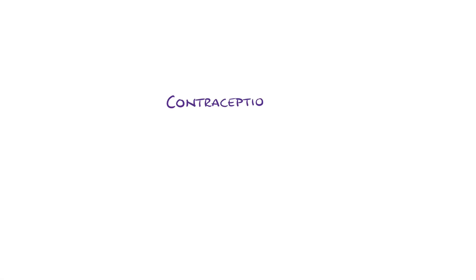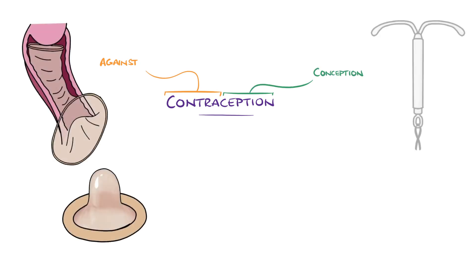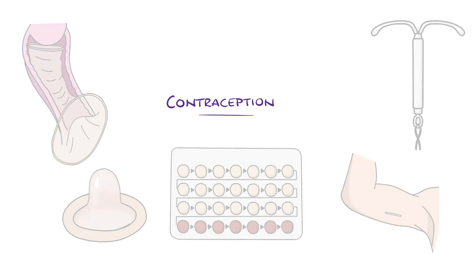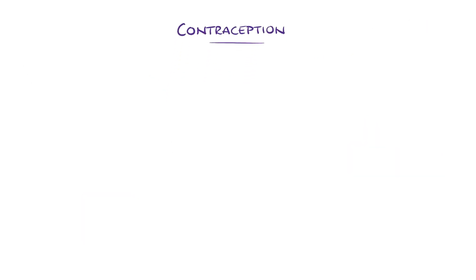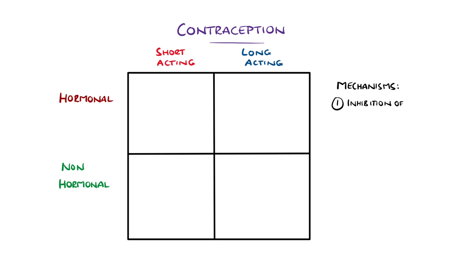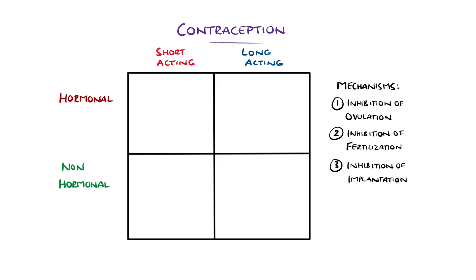In this video, we'll cover the main forms of contraception. The word itself means against conception, but the way each type achieves this is different. An easy way to remember them is by dividing into short or long acting, and hormonal or non-hormonal. You can also remember that the mechanisms by which they work fall under either inhibition of ovulation, fertilisation, implantation, or a combination of those three.